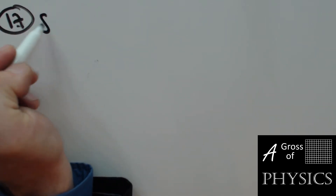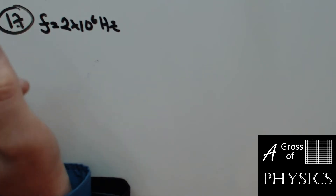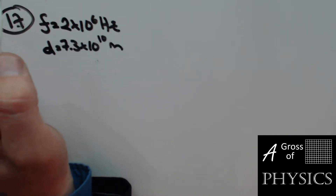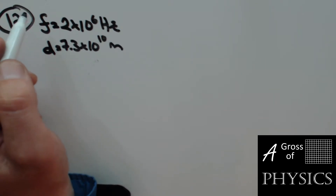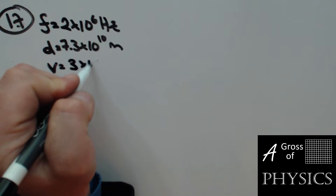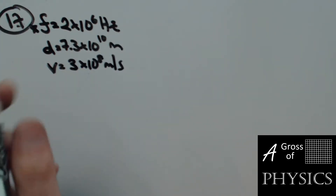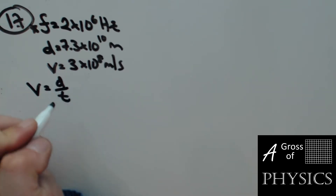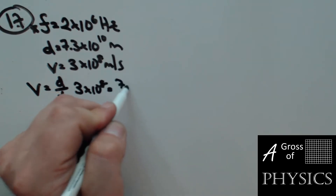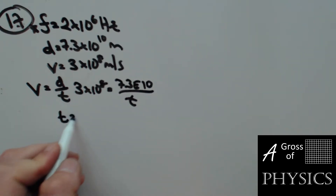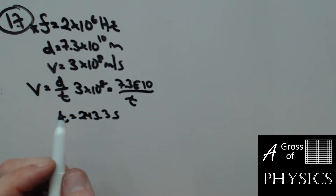Number 17: we have a frequency of 2×10⁶ hertz and a distance of 7.3×10¹⁰ meters — a spaceship around Mars sending a radio wave back to Earth. Since radio waves travel at the speed of light, 3×10⁸ m/s, the frequency doesn't determine the speed. Using V equals D over T: 3×10⁸ equals 7.3×10¹⁰ over T. So 7.3×10¹⁰ divided by 3×10⁸ gives 243.3 seconds. That's choice two.